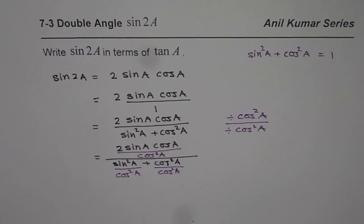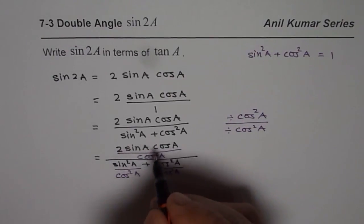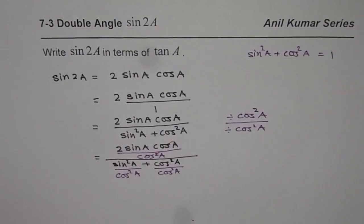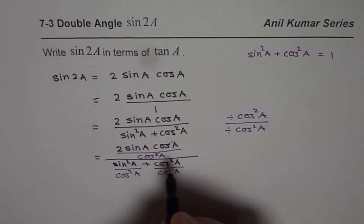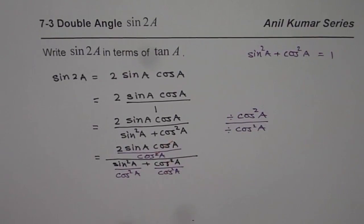When you do that, then in the numerator you can cancel one of the cos. You are left with 2 sine A over cos A, correct? In the denominator, this becomes 1. And this sin square A over cos square A becomes tan square A.